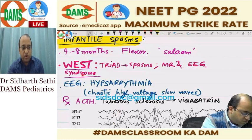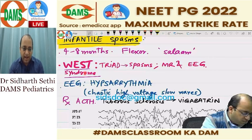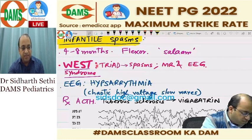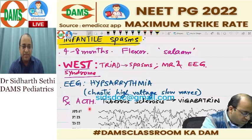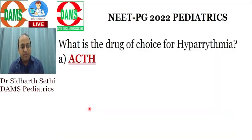Remember that West syndrome is not exactly synonymous with infantile spasms. West syndrome is a triad of infantile spasms, mental retardation, and the characteristic EEG. The drug of choice for infantile spasms, West syndrome, or hypsarrhythmia is ACTH — this question also came in INICET exam this year. Only for children with infantile spasms with tuberous sclerosis, the drug of choice is vigabatrin; otherwise it is ACTH.